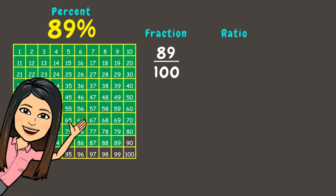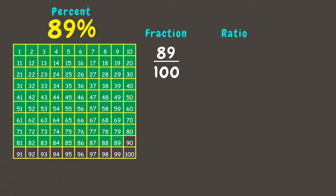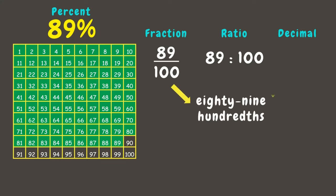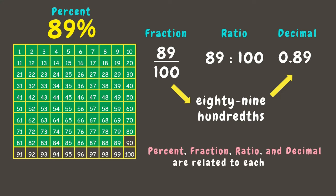Next, we can also write percent as a ratio. Ratio is a comparison of quantities. We can compare the number of correct answers to the total number of items, which is 89 is to 100. Finally, percent can also be written as a decimal, since decimal is another form of writing a fraction. 89 percent is 89/100 as a fraction, which can also be written as 0.89 in decimal. This means that percent, fraction, ratio, and decimal are all related to each other.